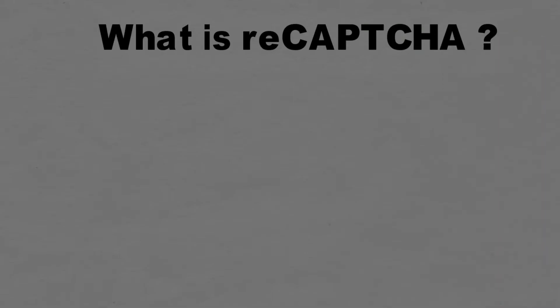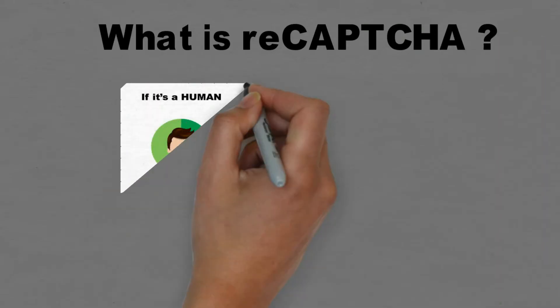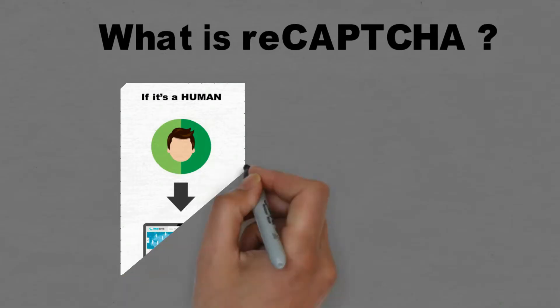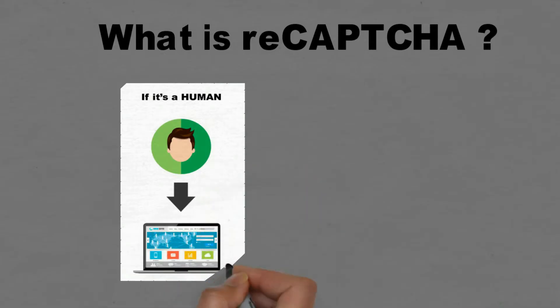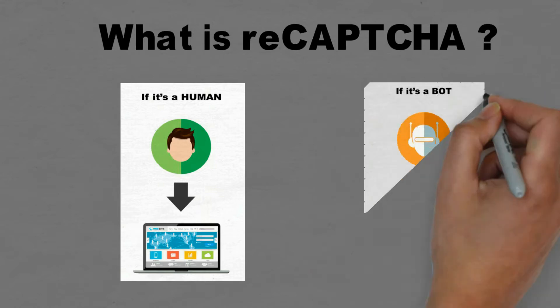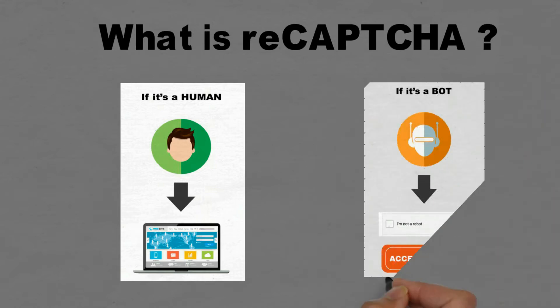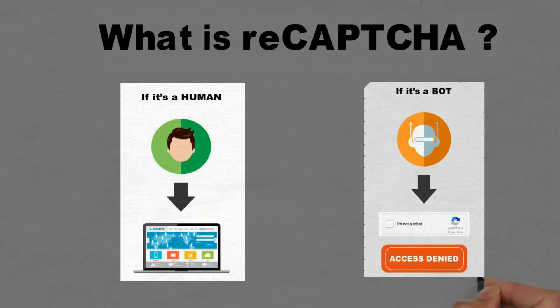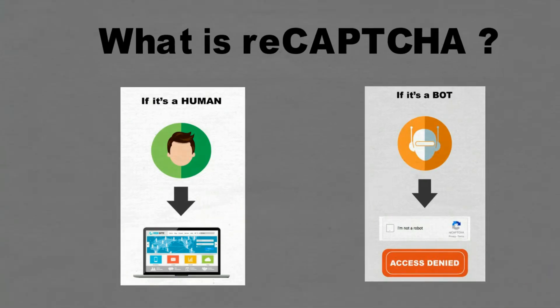reCAPTCHA protects websites against bots by generating and grading tests that humans can pass but current computer programs cannot. Google reCAPTCHA is a free service which fights and stops bots from spamming your website with fake inquiries or forum spamming. It differentiates humans and bots by using machine learning and advanced risk analysis. Google reCAPTCHA is integrated in websites which have forms or any such sort of user engagement feature.